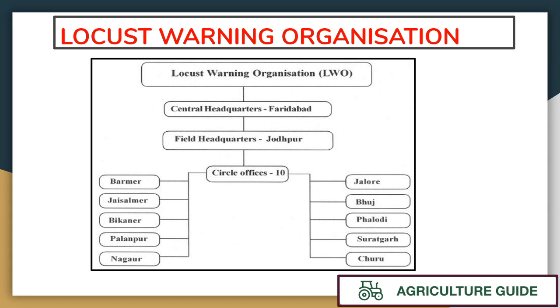The 10 circle offices of the Locust Warning Organization are namely: Barmer, Jaisalmer, Bikaner, Palanpur, Nagpur, Jalore, Bhuj, Phalodi, Suratgarh, and Churu.